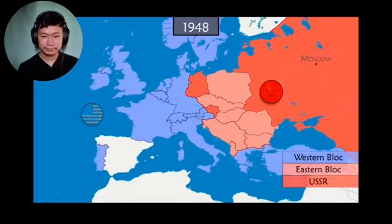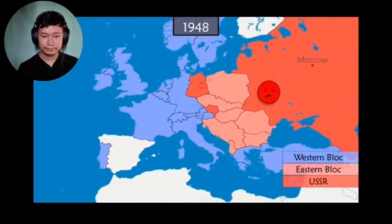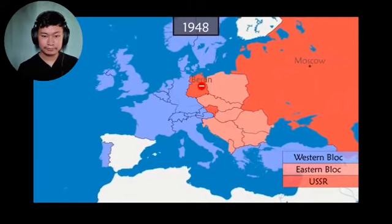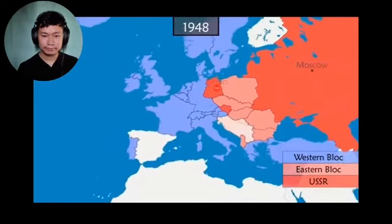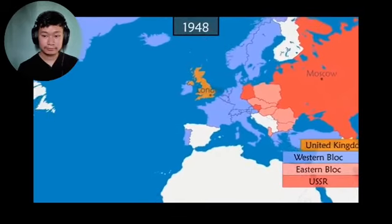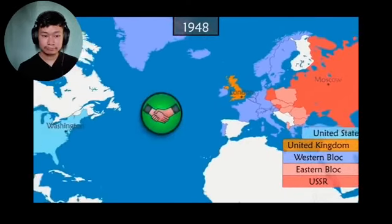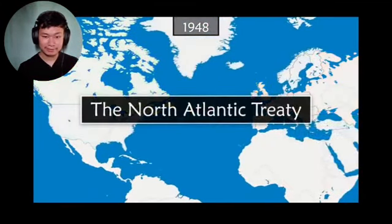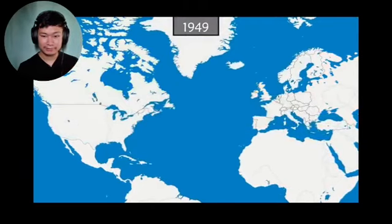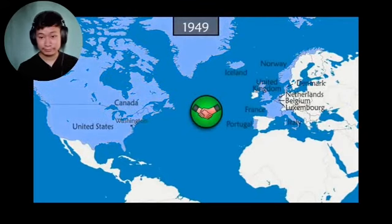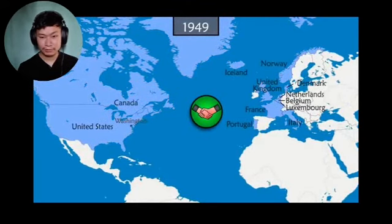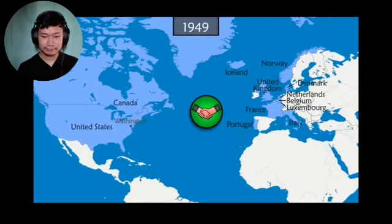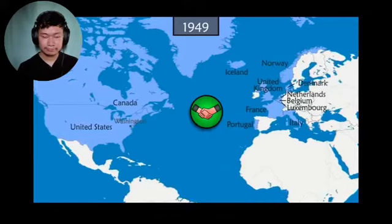The USSR, which is opposed to the creation of West Germany, organizes a blockade of West Berlin, which is under Western control. Tensions rise further. The United Kingdom secretly begins negotiations with the United States and Canada to establish a common defensive alliance. On April 4th, 1949, in Washington, twelve countries sign the North Atlantic Treaty, also known as the Washington Treaty, a political and military alliance whose central point is Article 5, which ensures the collective defense of each of the member countries.